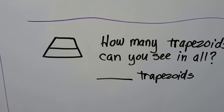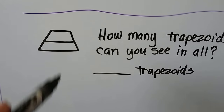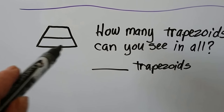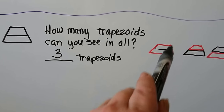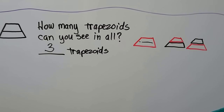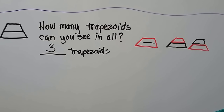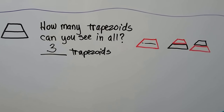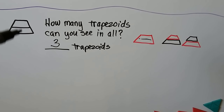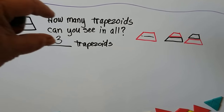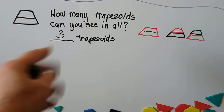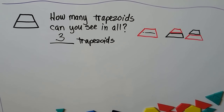How many trapezoids can you see in all? I see the big one going around the outside, a little one on top, and a longer skinny one on the bottom — I see three. Trapezoids can be different sizes. As long as they have a top and bottom where the lines are going the same way, and the sides are leaning inward — slanting inward — and they're the same length, then it makes a trapezoid.